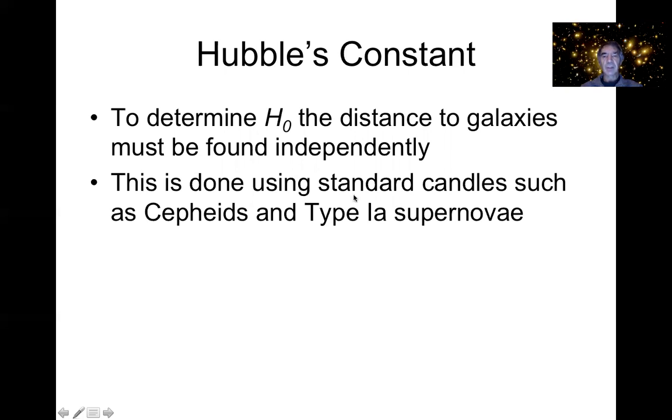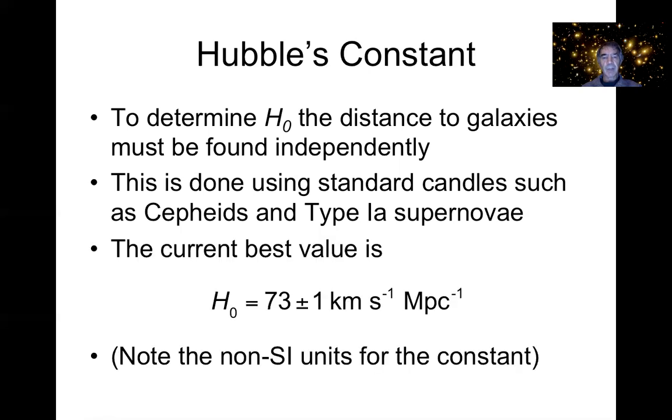So of course we've discussed that in detail in the last lecture. That's normally done with standard candles. That's what Hubble and his colleagues at that time were doing. They were using Cepheid variables in galaxies to determine the distance independently to those galaxies, and then working out what Hubble's constant was from that. And of course, in more modern times, we're using the type Ia supernovae as well.